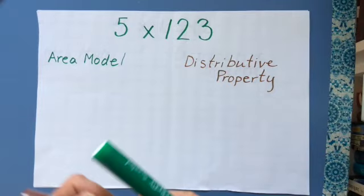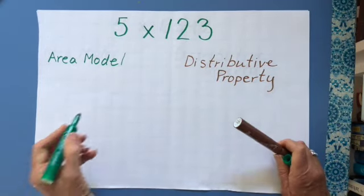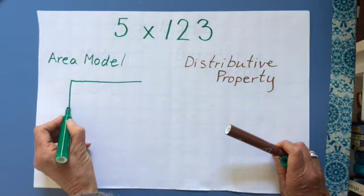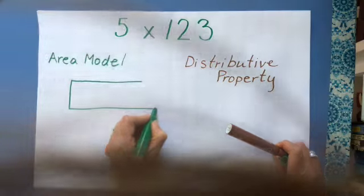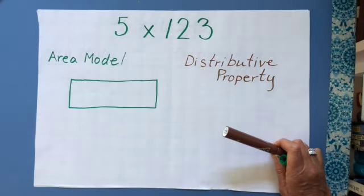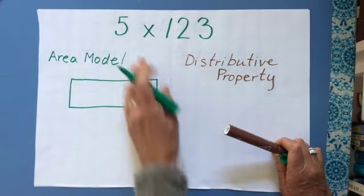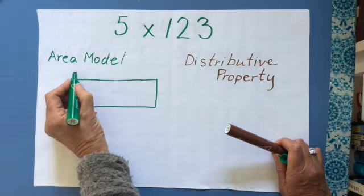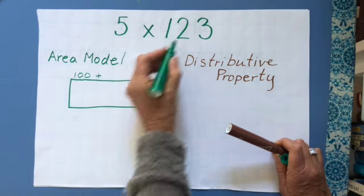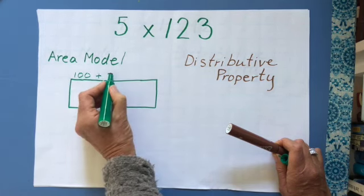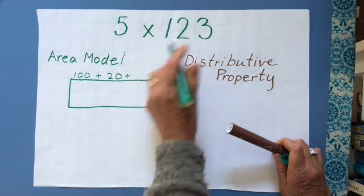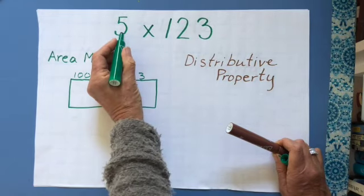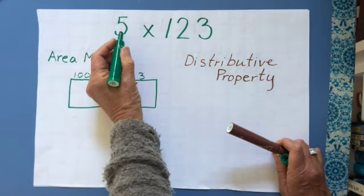Let's try it again. With the area model, the first thing I do is make my box. The first thing I do is write each number in expanded form. This one is really 100, plus this digit which is really equal to 20, plus this digit which is equal to 3. So I've written 123 in expanded form. Then this number in expanded form is just five, because that's really just five ones.